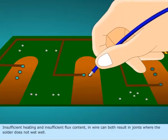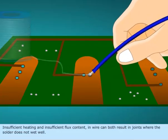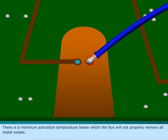Insufficient heating and insufficient flux content in wire can both result in joints where the solder does not wet well. There is a minimum activation temperature below which the flux will not properly remove all metal oxides.